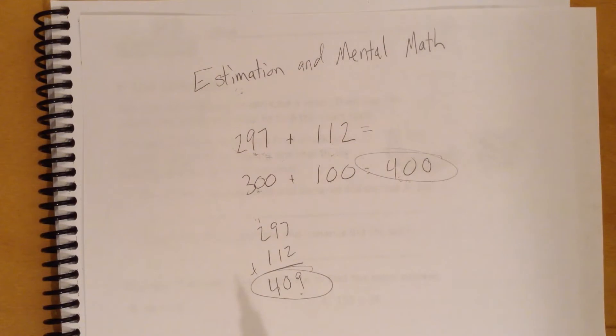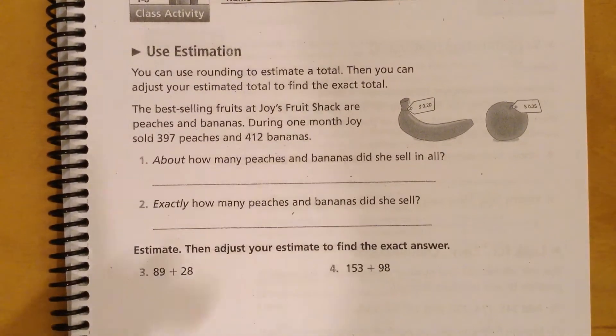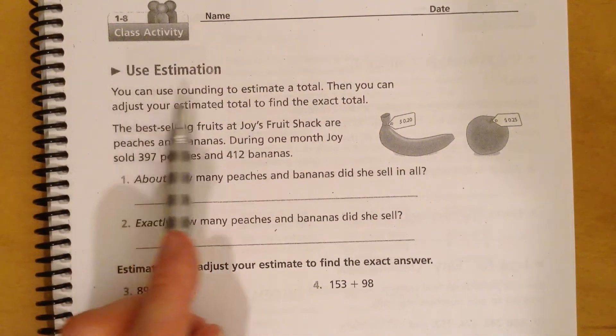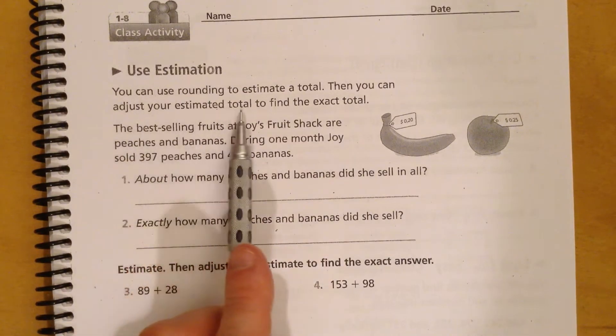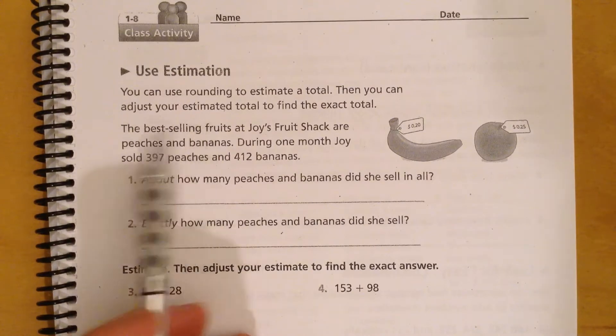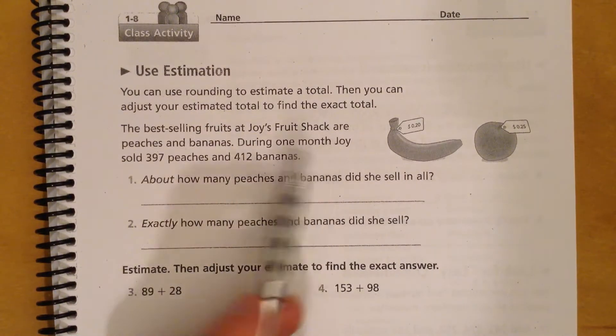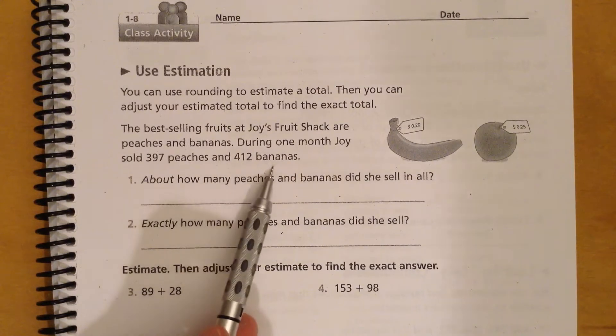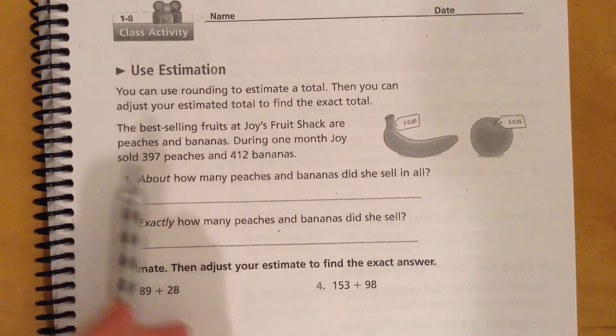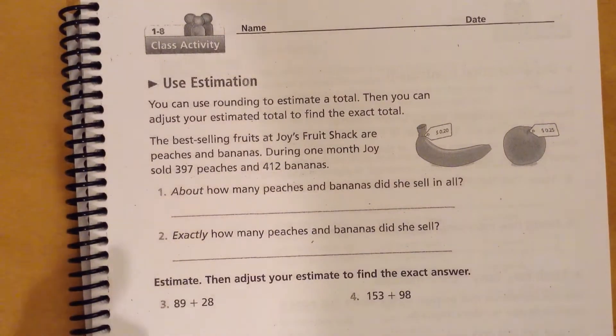So I'd like you to go ahead and take a look at your page here. So hopefully I sent this home with you. So it says we're going to use estimation. You can use rounding to estimate a total. Then you can adjust your estimated total to find the exact total, okay? So we're going to read this together. The best selling fruits at Joy's Fruit Shack are peaches and bananas. During one month, Joy sold 397 peaches and 412 bananas. So about how many peaches and bananas did she sell in all? So we're going to be estimating these numbers and kind of trying to guess about how many she sold, right?